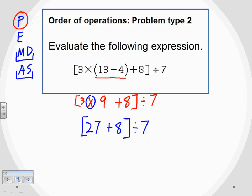But this time inside the parentheses, I only have one operation. So there's only one thing I can do. I have to do that addition next. 27 plus eight, that gives me 35.